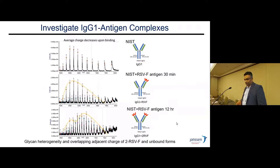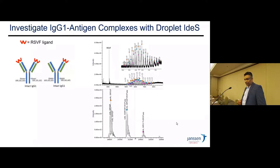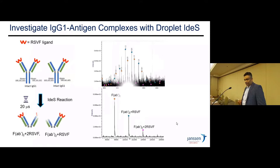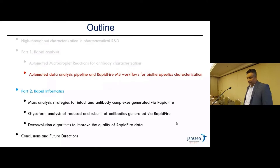We've also examined micro droplet digestions for antigen-antibody interaction studies. Loading RSV antigens produces very complicated spectra due to glycan heterogeneity and overlapping charge states of unmodified and RSV-bound forms. The best strategy is to perform IdeS micro droplet digestions. You can see signal suppression from free RSV antigen, and the deconvoluted spectrum shows multiple glycoforms as well as bound and unbound forms. After micro droplet digestion, bound forms are clearly resolved with no glycosylation attached to the signal.